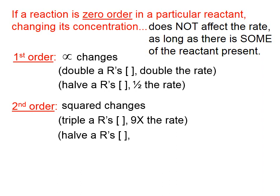If you cut that reactant's concentration in half, then the rate will be affected by one-half squared. So it will drop to one-fourth of what it was.